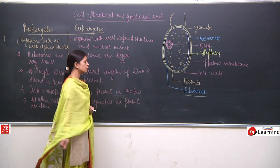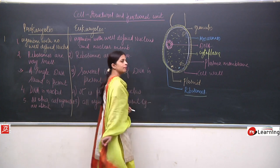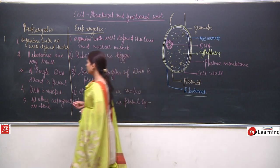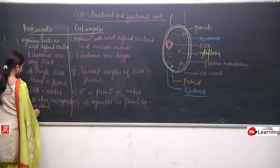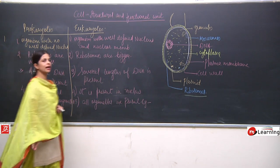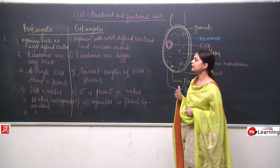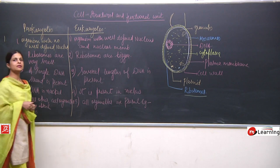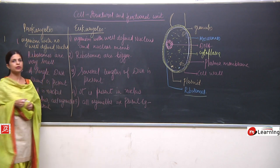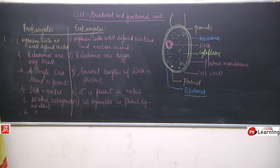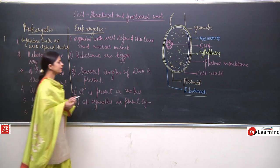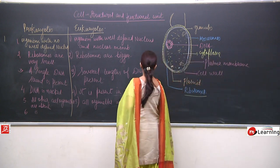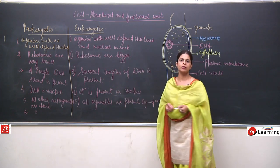For examples: organelles like mitochondria, Golgi bodies, and vacuoles are present in eukaryotes but absent in prokaryotes. Examples of prokaryotes are bacteria and blue-green algae. Examples of eukaryotes include all plants, animals, and fungi — all of these are eukaryotic organisms.